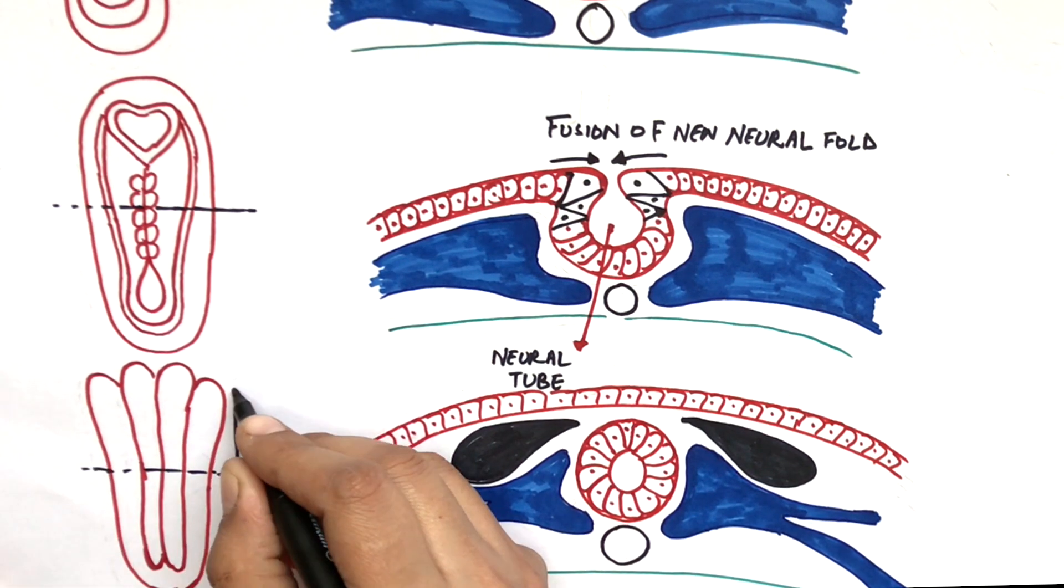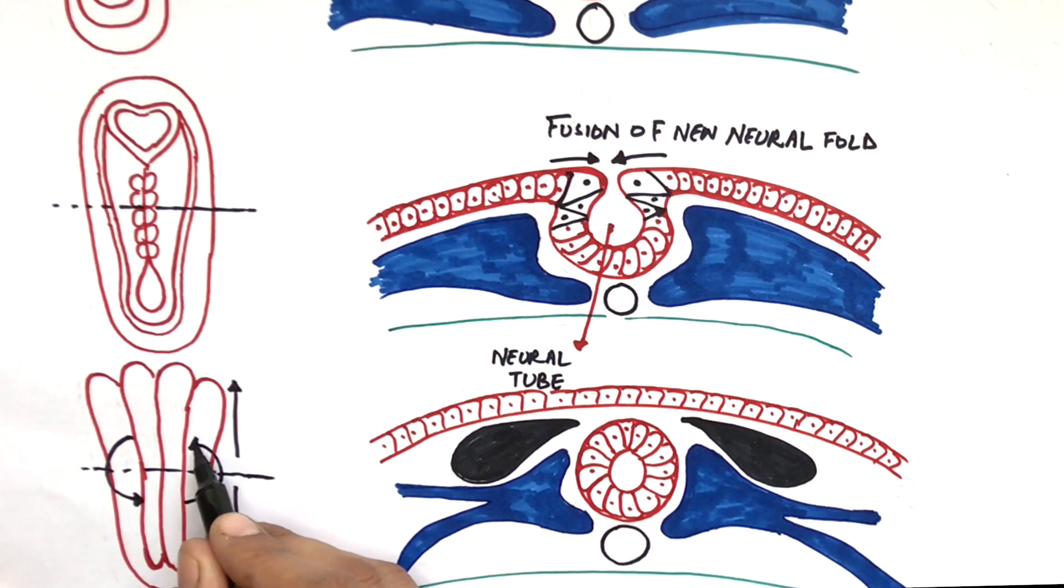The folding of embryo will take place in two planes along the rostrocaudal and the lateral axis.